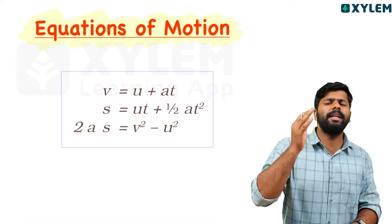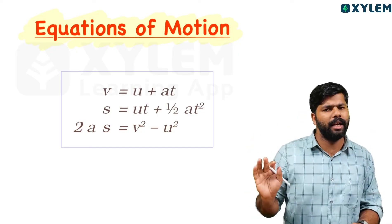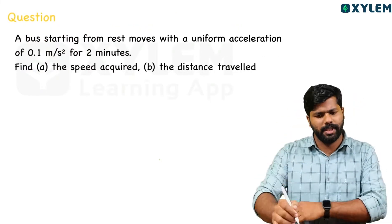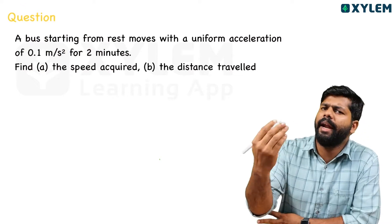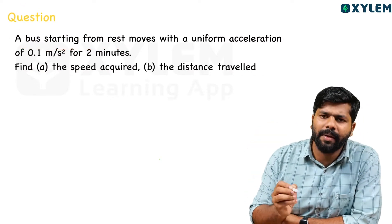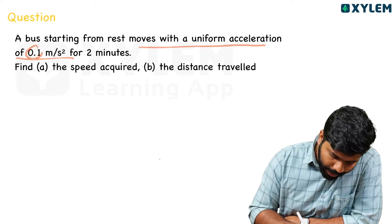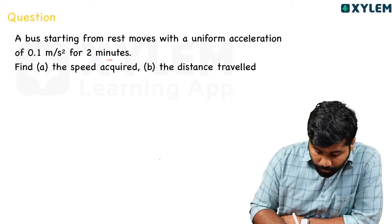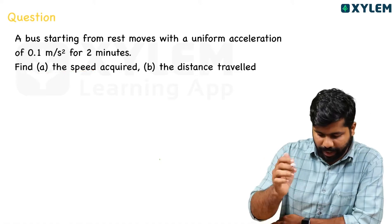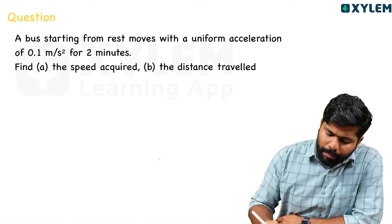We will do all types of problems using these three equations. Here is the first question: A bus starting from rest moves with a uniform acceleration of 0.1 m/s² for 2 minutes. Find the speed acquired and the distance travelled.